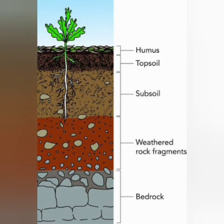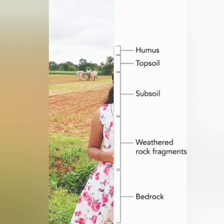This is how the layers of soil look. We can see only the topsoil which we walk on. Next is the subsoil — the roots of plants penetrate till this layer. Then comes the weathered rock fragments, and the last is the bedrock. The layers of soil are formed by the weathering of rocks, which will be discussed in my next video.